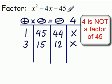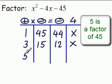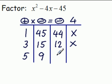Does 4 go into 45? No. 5 goes into 45, 9 times. 9 minus 5 is 4. That's the one we're looking for.